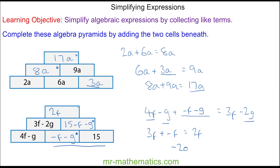Minus 2g add a negative g is minus 3g, add the 15. Thank you very much for watching, and I hope you found that useful. Thanks again and take care.